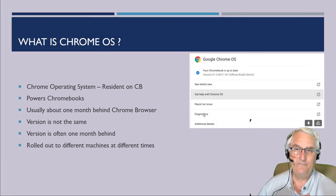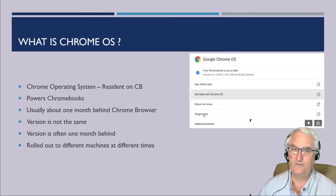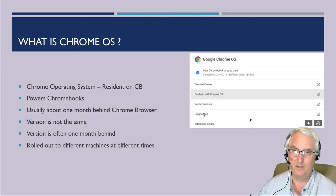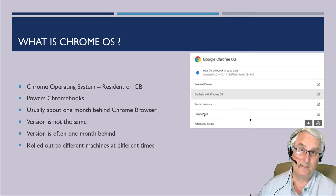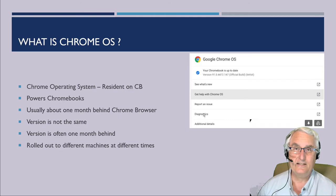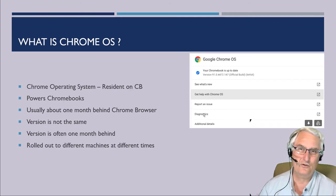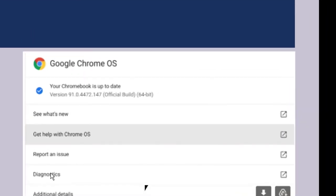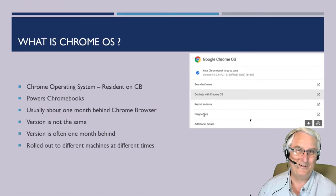The version difference is often about one or two months behind, but that's changing — it's getting shorter and shorter. The difference between the Chrome browser version number and the Chrome OS version number is narrowing. The operating system is also rolled out to many machines at the same time, so not everybody gets the same version simultaneously. On my Chromebook, the operating system is currently version 91.0 — remember, in my Chrome browser it was 92 — so they're not always the same.